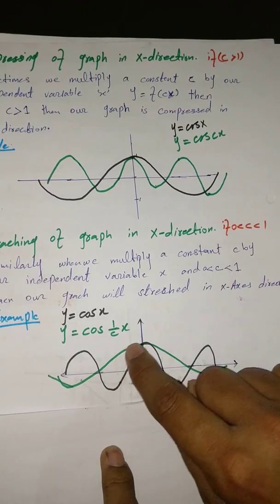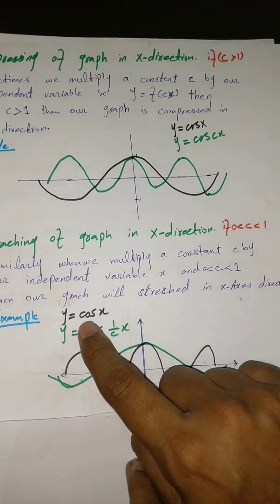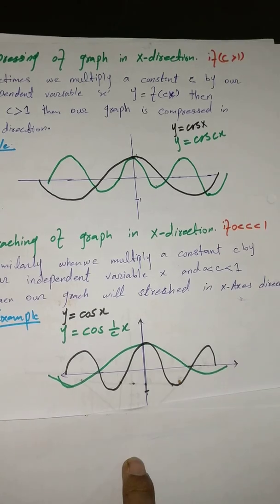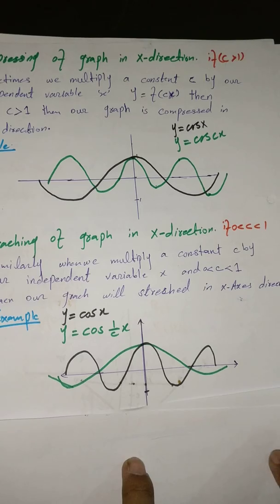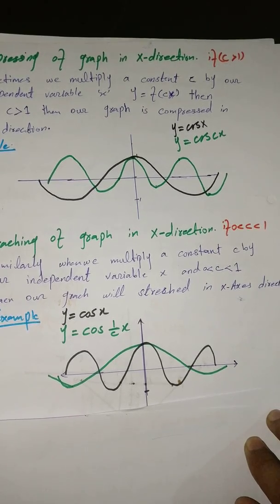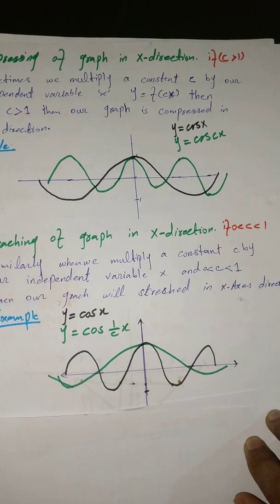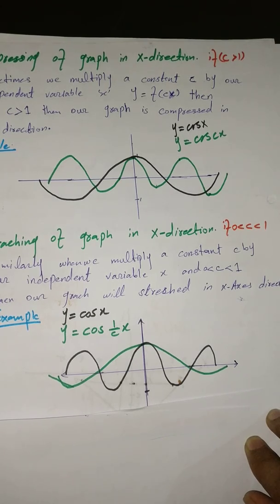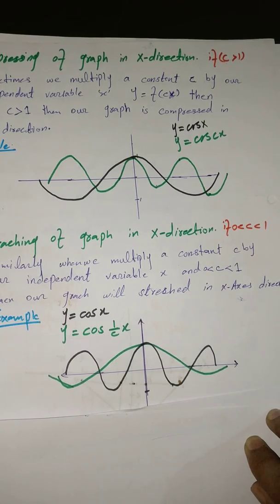In a green color is the stretching of the graph of cos(x). Dear students, in this video I explained the stretching and compressing of different graphs. You can take other examples and solve them at home. Thank you for watching my video. Please subscribe my channel, press the bell icon, and feel free to comment or email me — my email address is in the description.